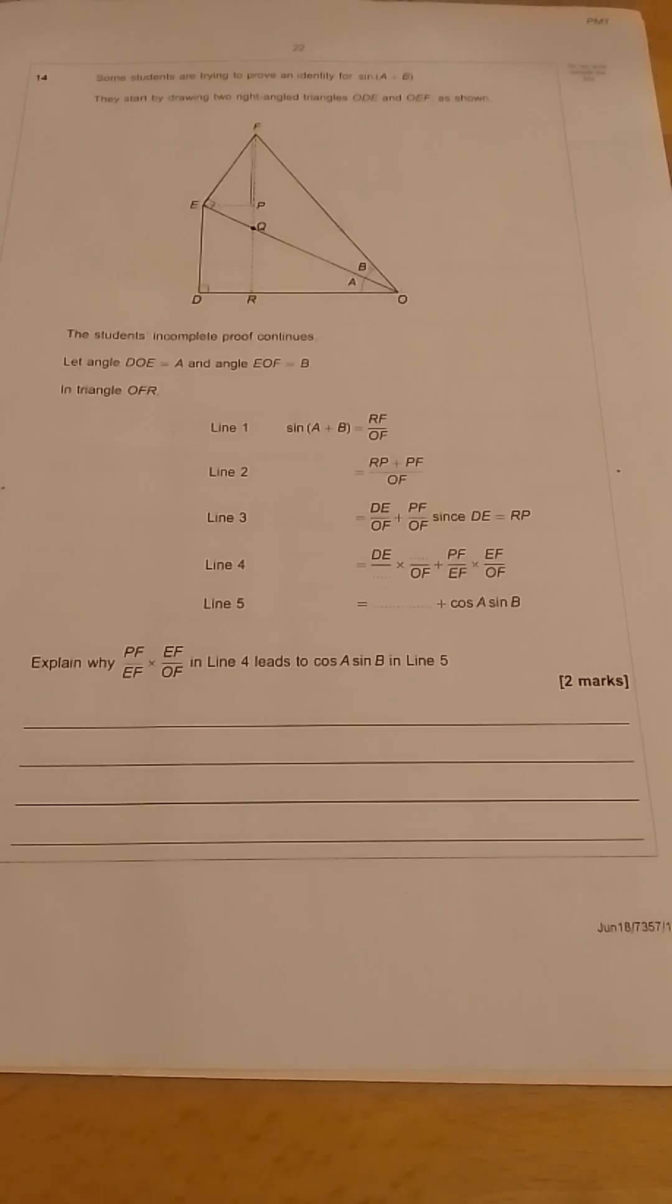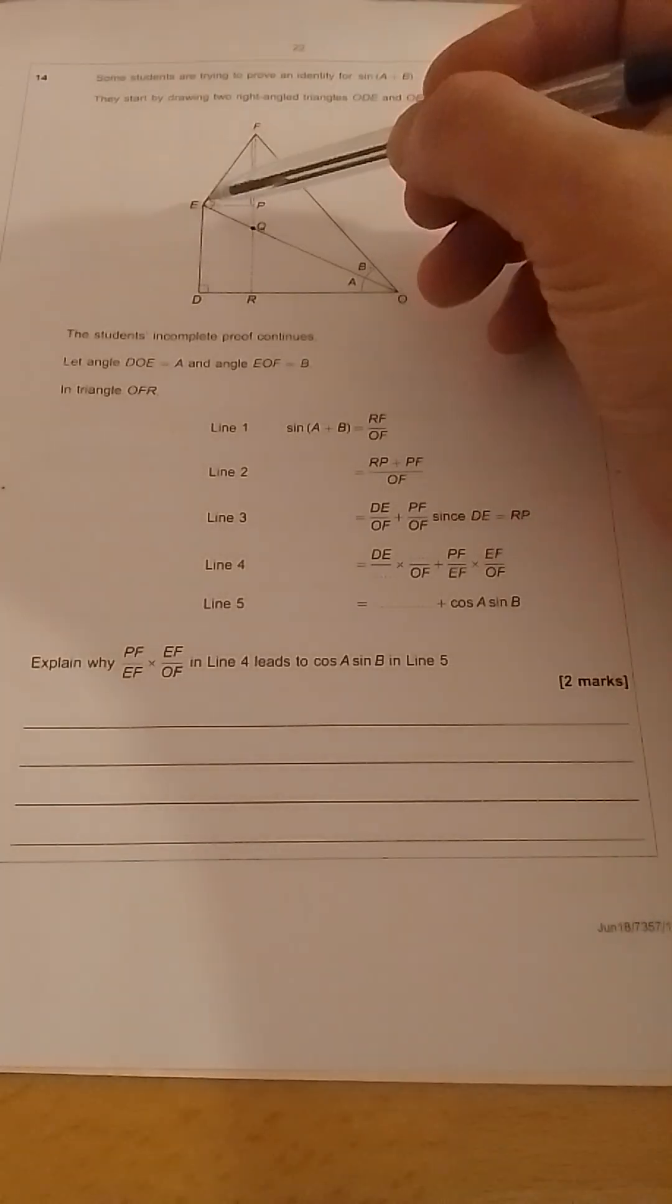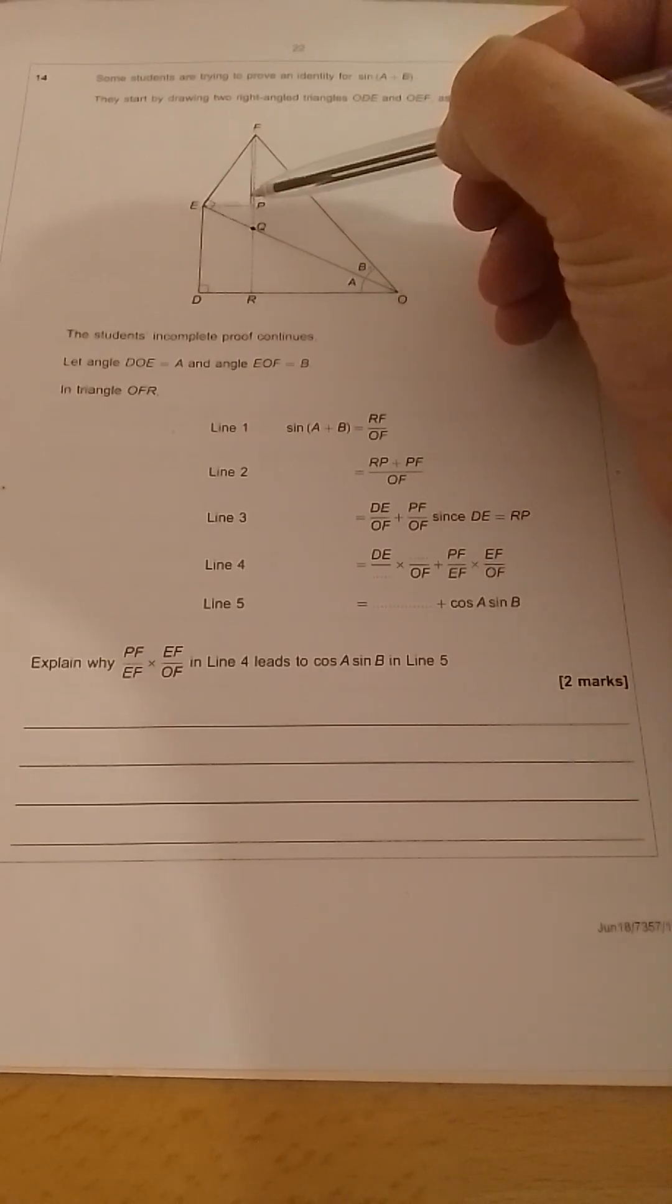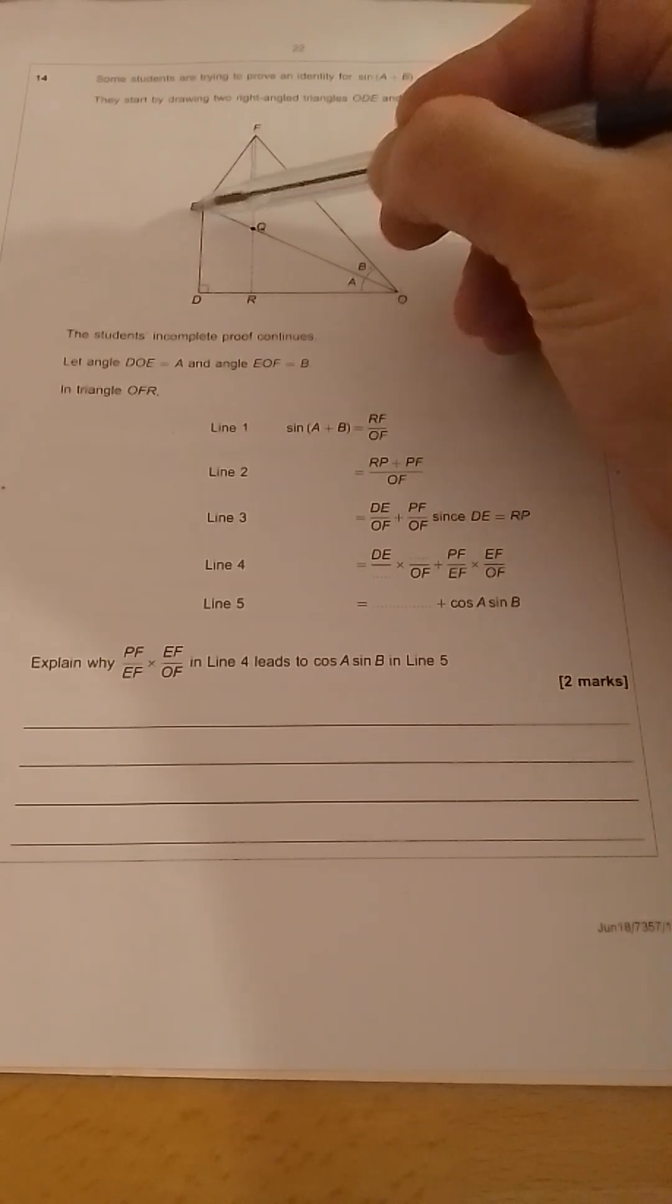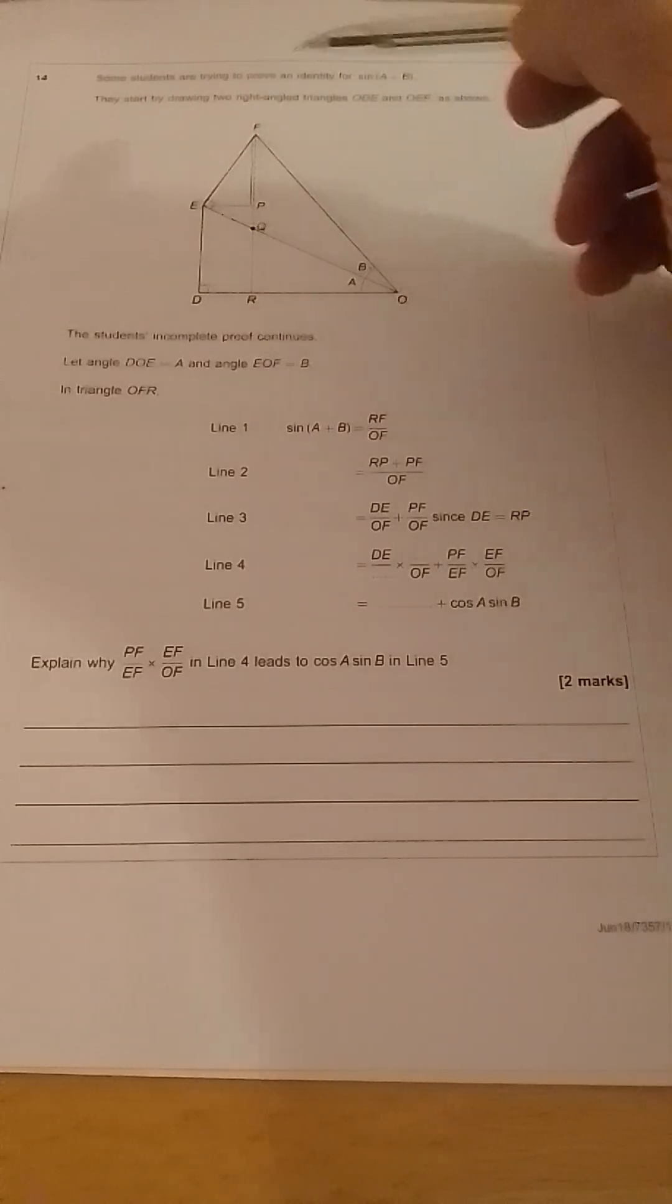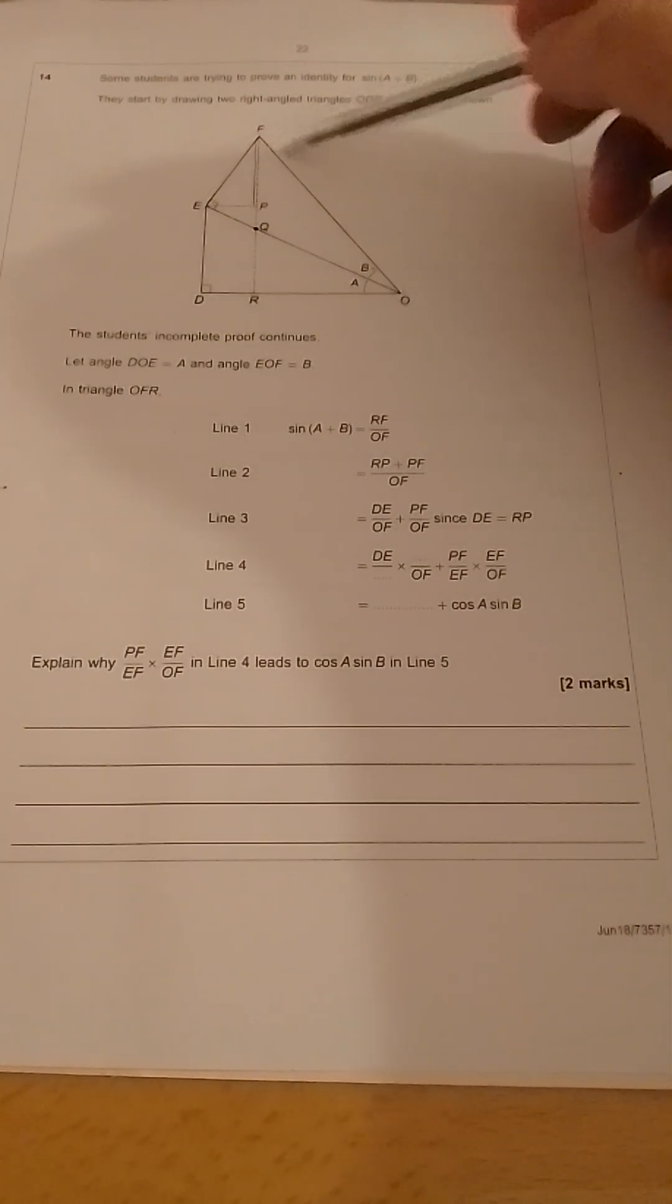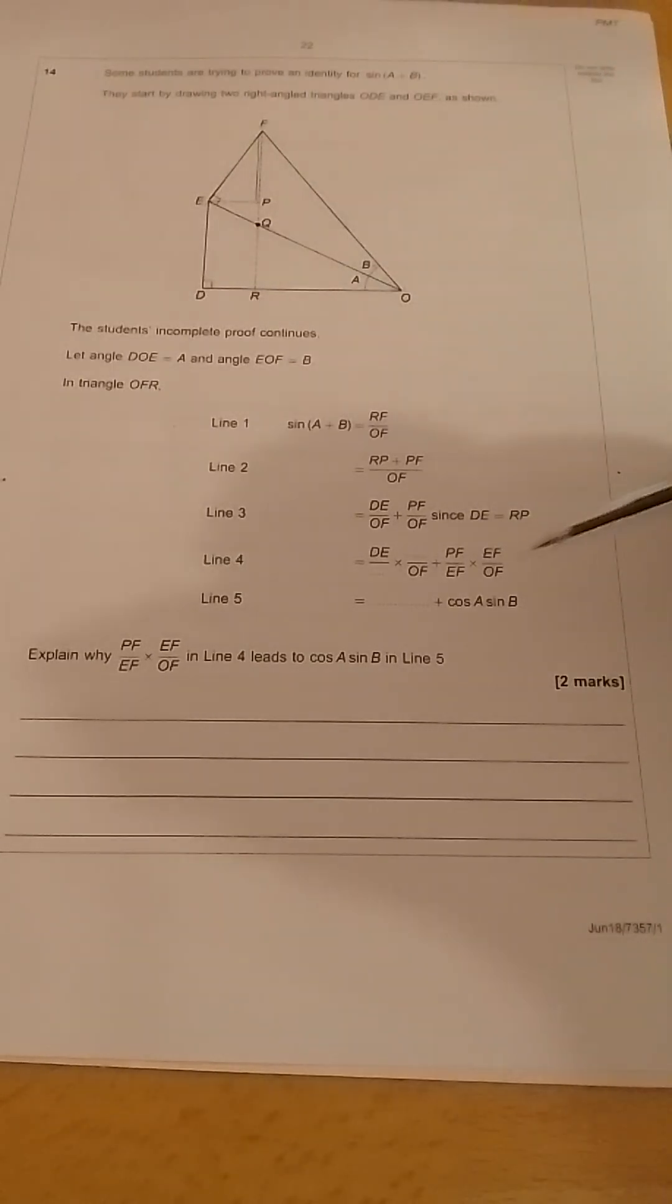Question 14A. Explain why PF, which is this side here, divided by EF, which is this side here, times EF, which is this side here, divided by OF, which is this side here, gives cos A sin B.